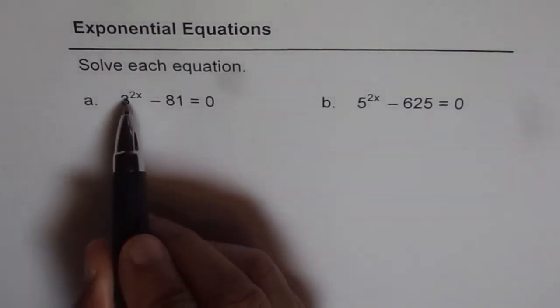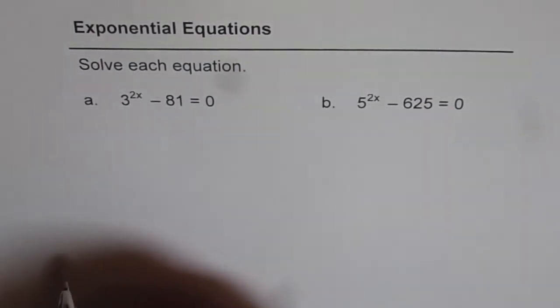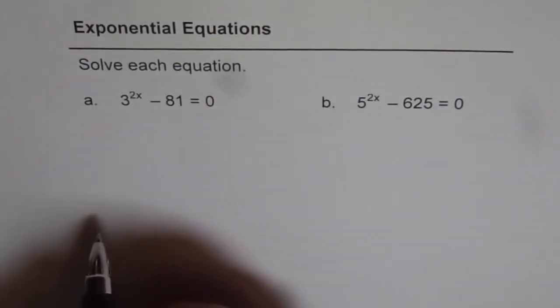Now, 3 to the power of 2x minus 81 equals 0. So what we can do is we can take 81 on the other side and then write 81 as 3 to the power of something.